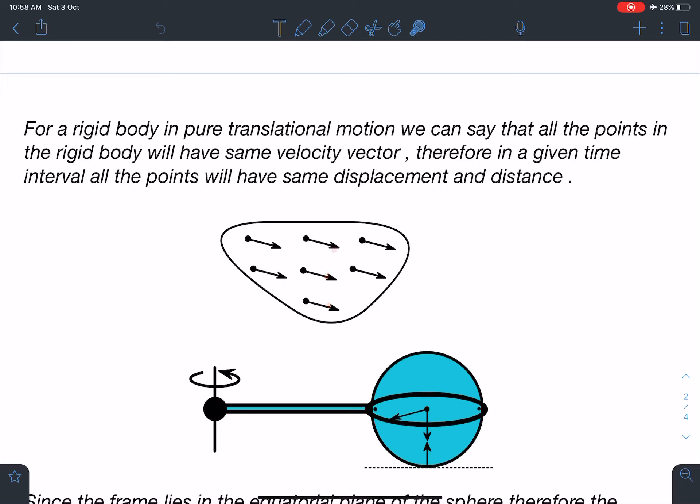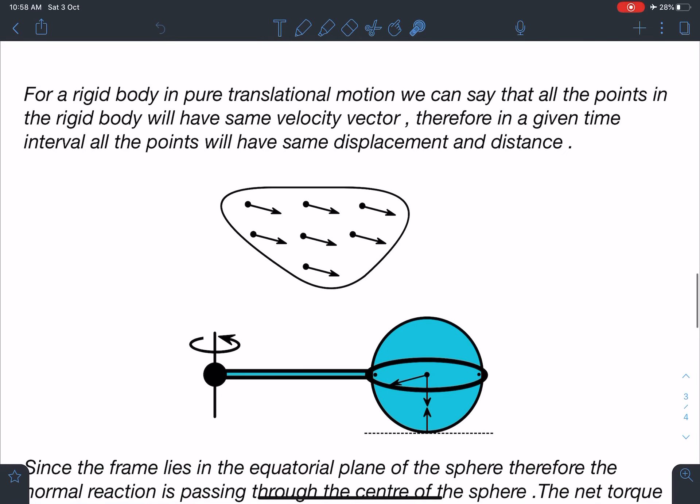So if that happens then all these velocities are same and if velocities are same displacement and distances also are going to be same in pure translation. You can see here this point is A and this point is B.